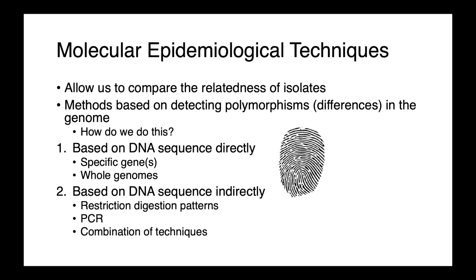This is where molecular epidemiological techniques come in. They allow us to directly compare the relatedness of isolates based on detecting polymorphisms or differences within the genome — not just looking at whether a specific resistance gene is present, but looking at the DNA more holistically. We can do this using two main types of techniques: examining the sequence directly, whether specific genes or the whole genome; or looking at the genome sequence indirectly through restriction digestion patterns, PCR such as random amplified polymorphic DNA, or some combination of these techniques.